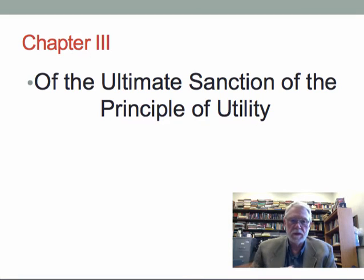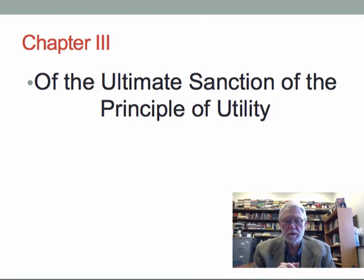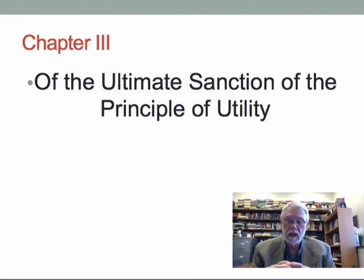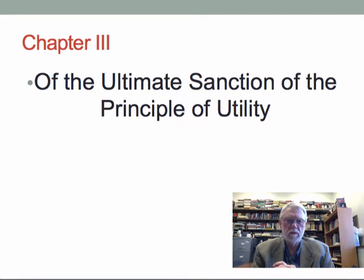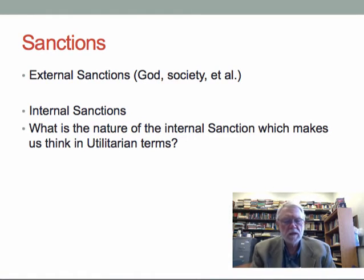Let's start now with chapter 3 of Mill's utilitarianism. Chapter 3, as the title indicates, is on the sanction of the principle of utility — the ultimate sanction. By sanction we mean what provides the justification for something. The question is: what compels us? What is the ultimate sanction of the principle of utility according to Mill?